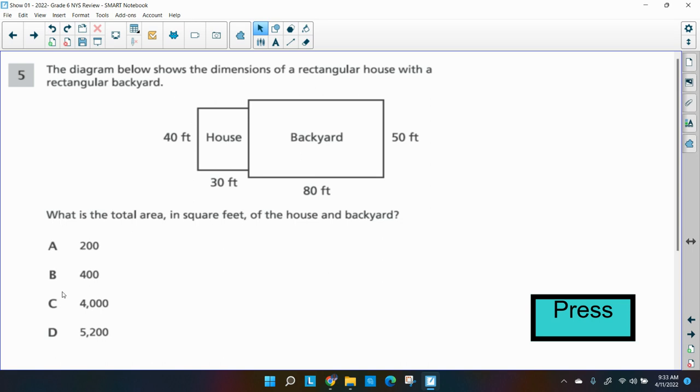All right, so first thing we notice, and let's do a little text coding here. We have a rectangular house. So we're looking for the total, and let me circle that, because that means we have to add, and they said area. So I'll underline that.